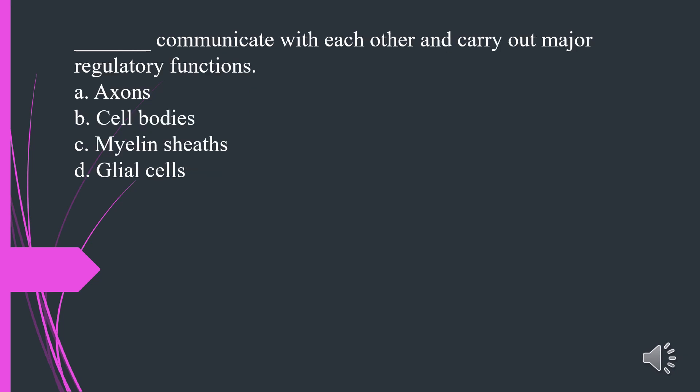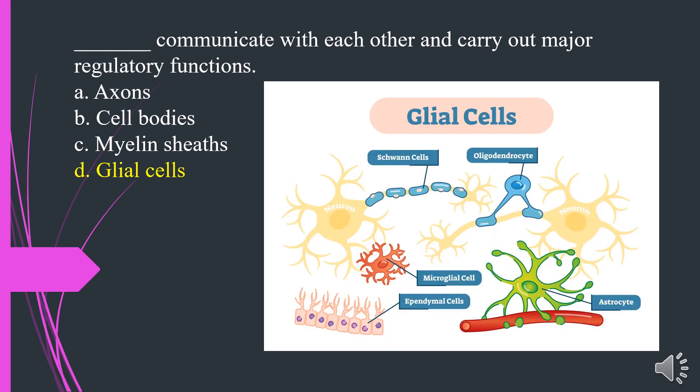What communicates with each other and carries out major regulatory functions? A. Axons. B. Cell bodies. C. Myelin sheaths. D. Glial cells. The answer is D. Glial cells.